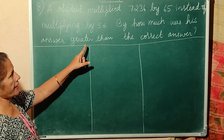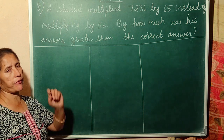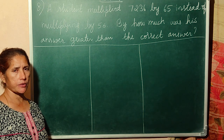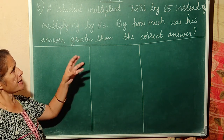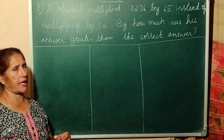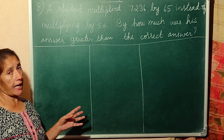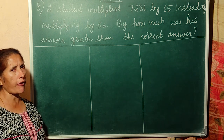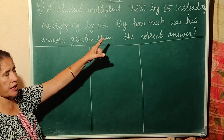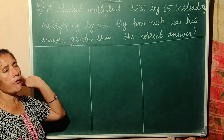A student multiplied 7236 by 65 instead of multiplying by 56. By how much was this answer greater than the correct answer? The teacher had given 7236 into 56, but the student made a mistake and wrote 65 instead of 56.